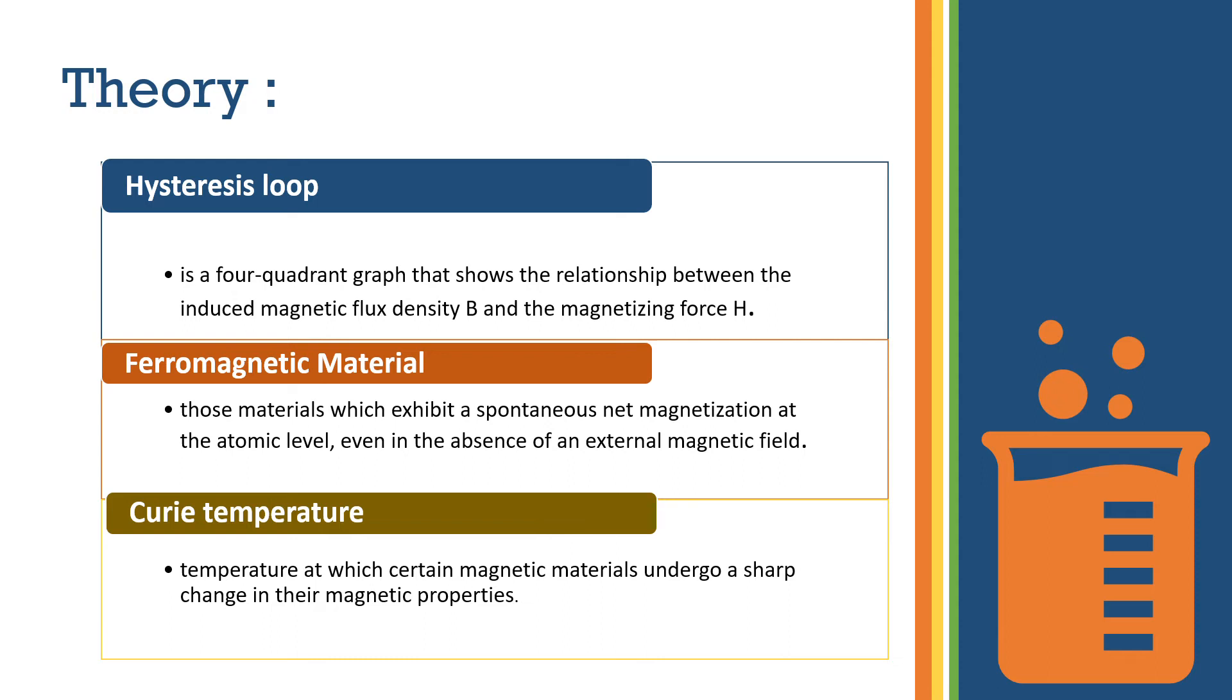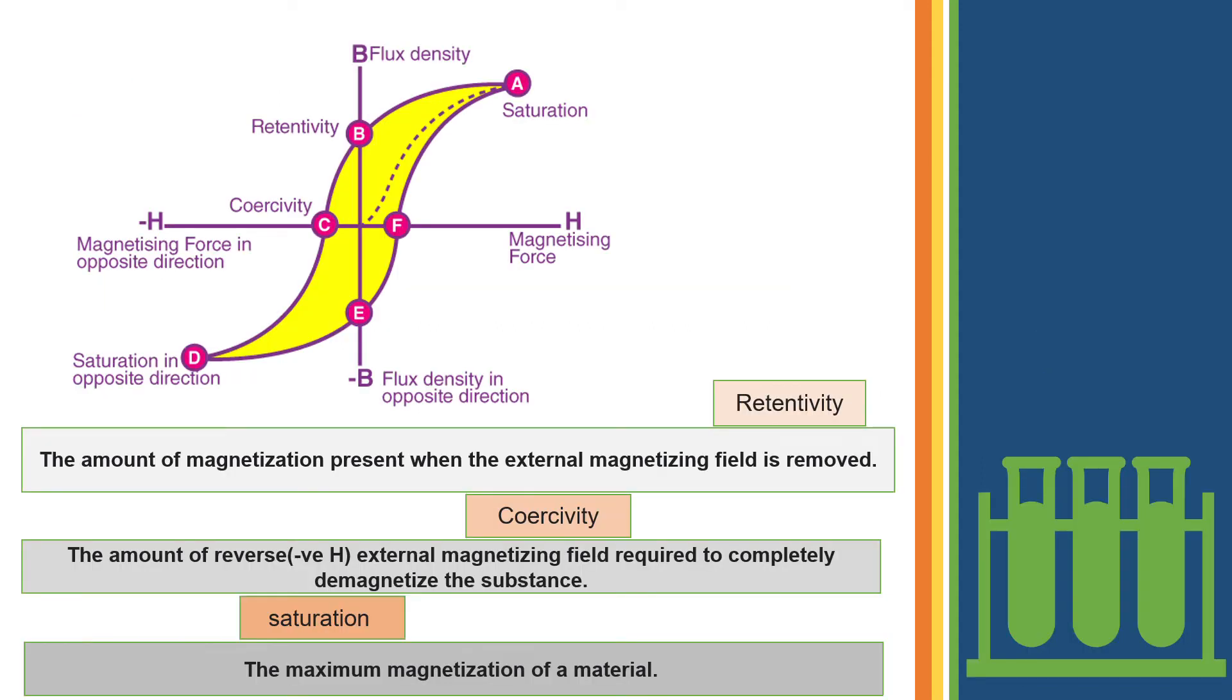We just heat it in the oven and the loop will change. We have seen the hysteresis loop or B-H loop. There are three important points: retentivity, coercivity, and saturation.